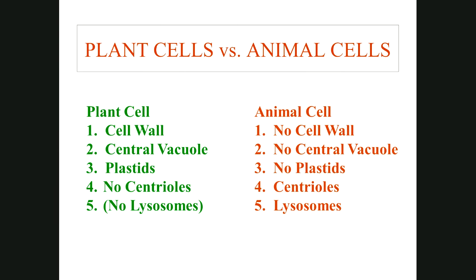Plant cells do not have lysosomes. Lysosomes — from 'lyso' meaning destructive and 'some' meaning body — are membrane-bound packets of enzymes. Animal cells, especially white blood cells, do have them. When a white blood cell engulfs a bacterium, lysosomes fuse with the membrane around the bacterium and dump enzymes in, digesting it.